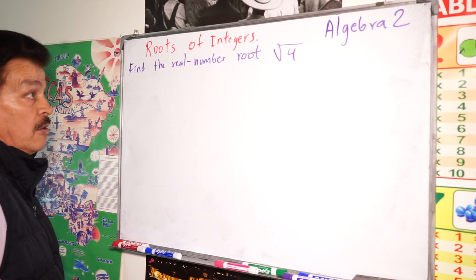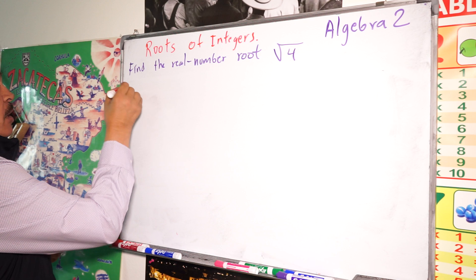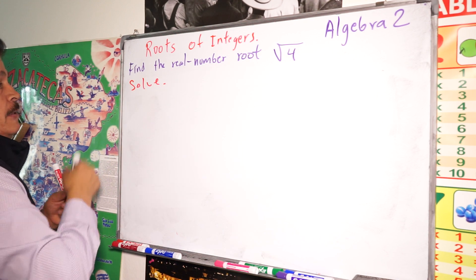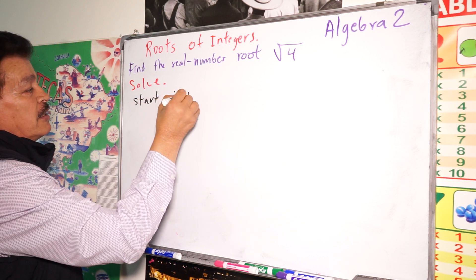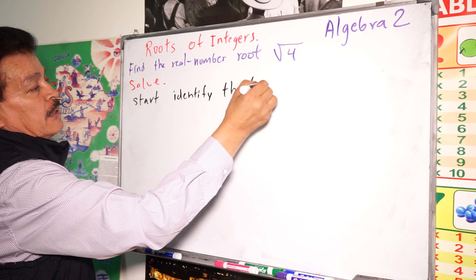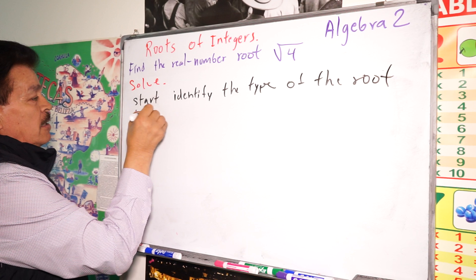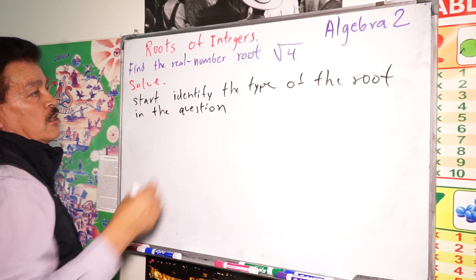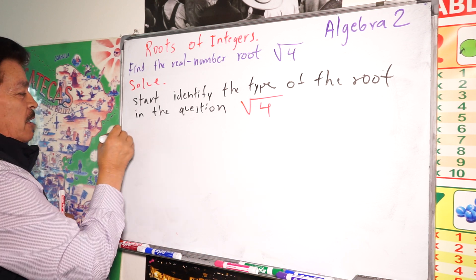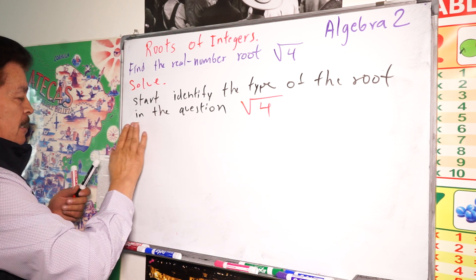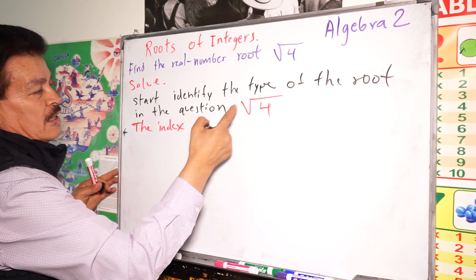That result is called the principal root. These are the key concepts to keep in mind — it is the concept part. Now let's solve the problem. First, identify the type of root in the question. In our case, it is a square root of four. The index is two, since it is a square root.